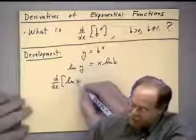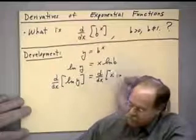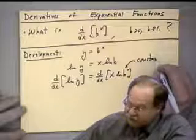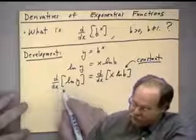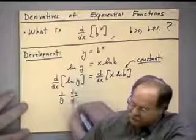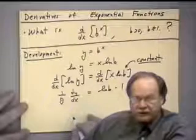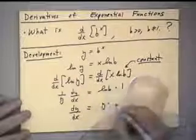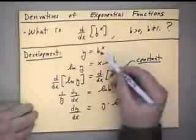Now take the derivative of both sides using implicit differentiation. On the left, the derivative of ln y is one over y times dy/dx by the chain rule. On the right, ln b is a constant, so the derivative of x times ln b is just ln b. Solving: dy/dx equals y times ln b. Since y equals b to the x, we are done.